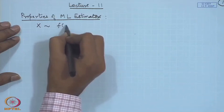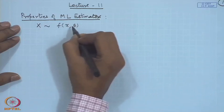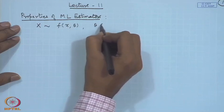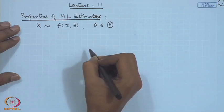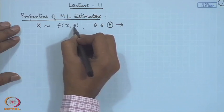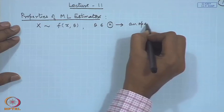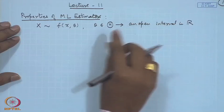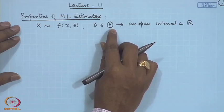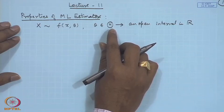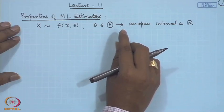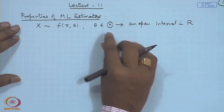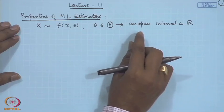In general, we have the model where observables come from a distribution with a probability mass function or probability density function f(x, theta), where theta belongs to a parameter space. Usually for a one-dimensional parameter, theta is considered to be an open interval in the real line. For example, if we consider the Poisson distribution, the parameter lambda is positive, so theta = (0, infinity). For normal distribution with mean mu and variance one, mu is the whole real line.